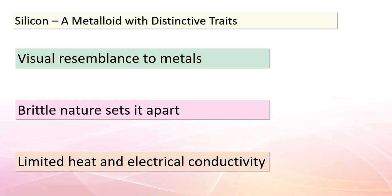Today, we're focusing on silicon — an element that showcases the intriguing nature of metalloids. Silicon may look like a metal at first glance, but its brittleness sets it apart. Unlike metals that can be bent and molded, silicon is fragile and not malleable. Its conductivity for heat and electricity is also worth noting — while not as efficient as metals, silicon plays a crucial role in modern technology. Silicon's unique electrical properties make it a cornerstone of electronics and semiconductors, enabling the devices we use every day.